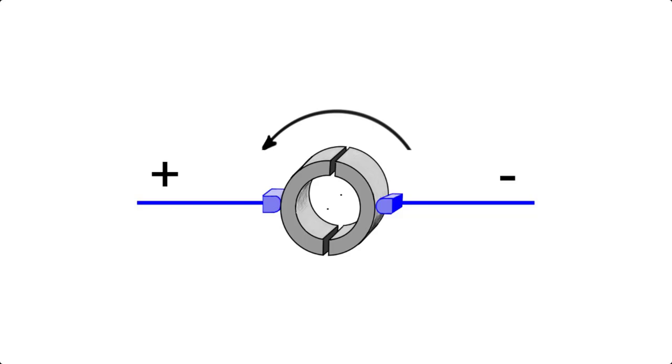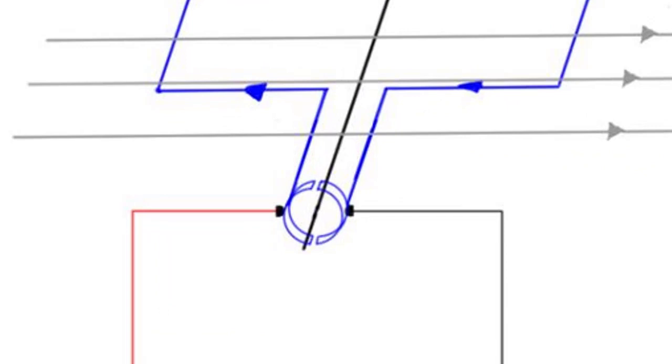In its simplest form, the commutator is made up of a split ring of conducting material, separated by insulating material, and attached to the axis of the loop or coil, with each side of the ring being attached to one end of the loop or coil, as you can see in the diagram.